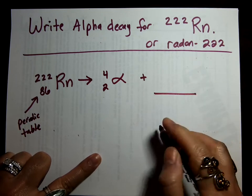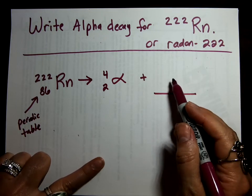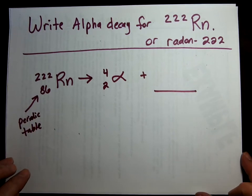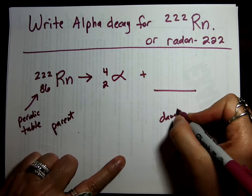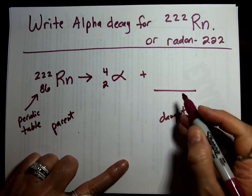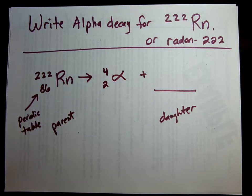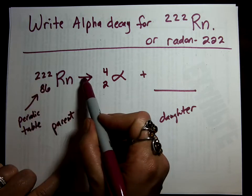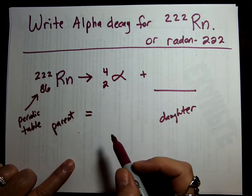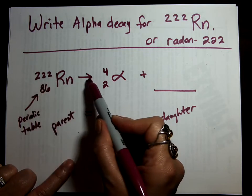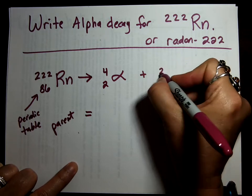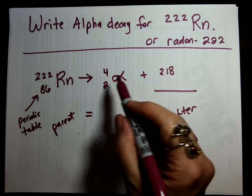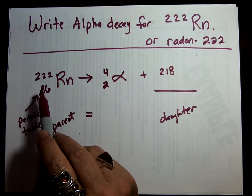And now, we have to figure out what this atom is on the product side. It's called the daughter. So this is called the parent. And this is the daughter atom. We have to figure out what goes in the blank. And we do this by the numbers. The top numbers have to add up, and the bottom numbers have to add up. So take this as an equal sign. So 222 equals 4 plus what? So 218. 218 plus 4 is 222, right? Yeah.